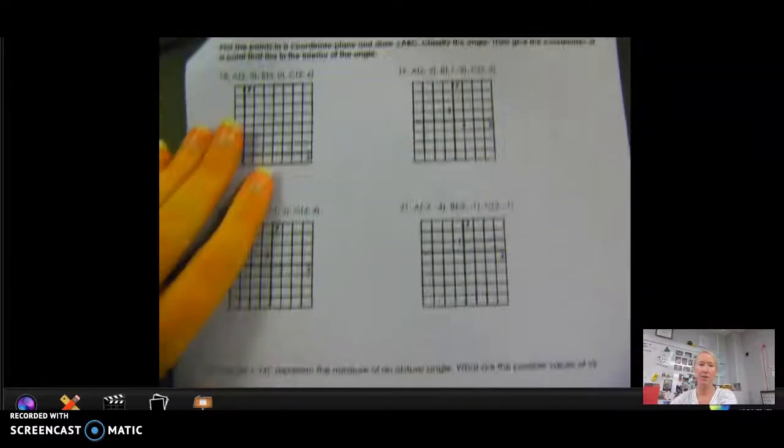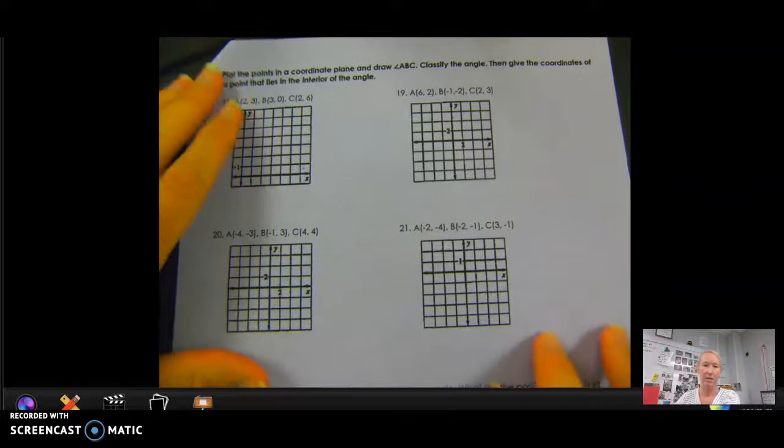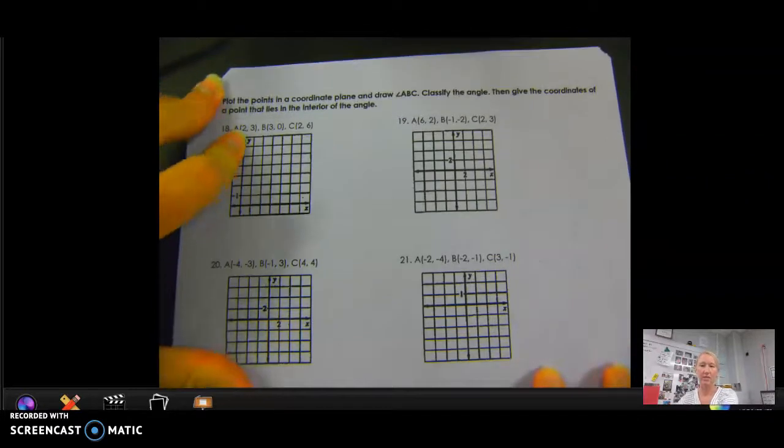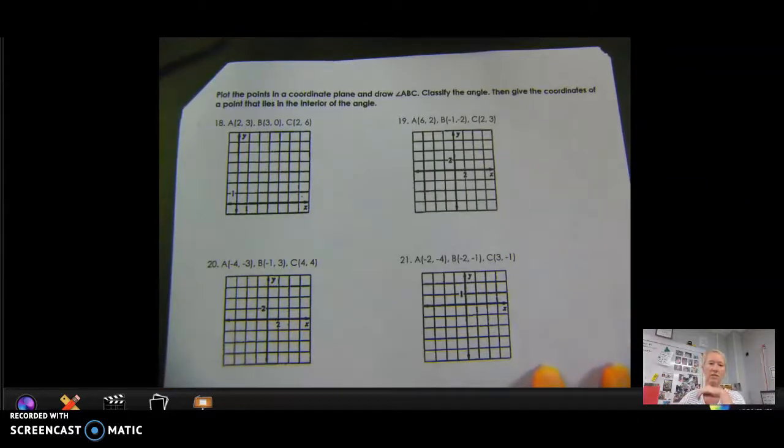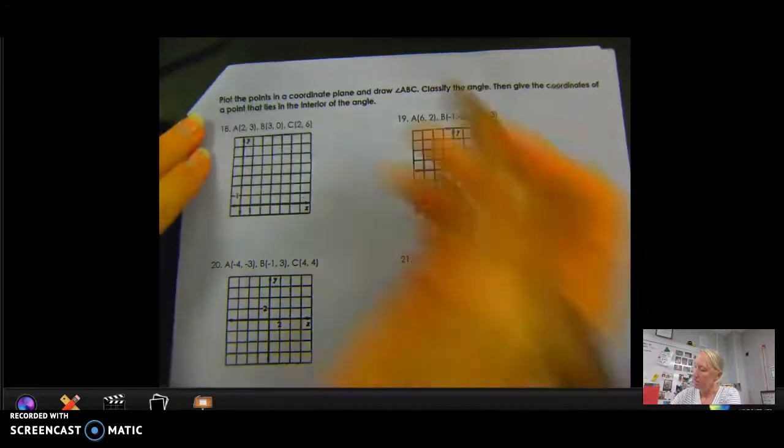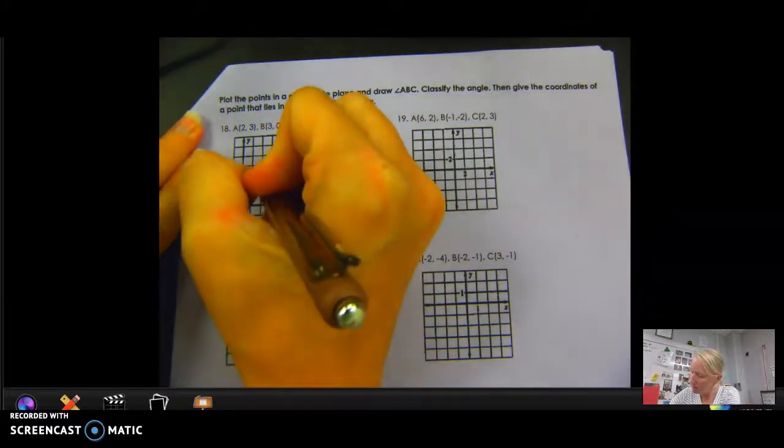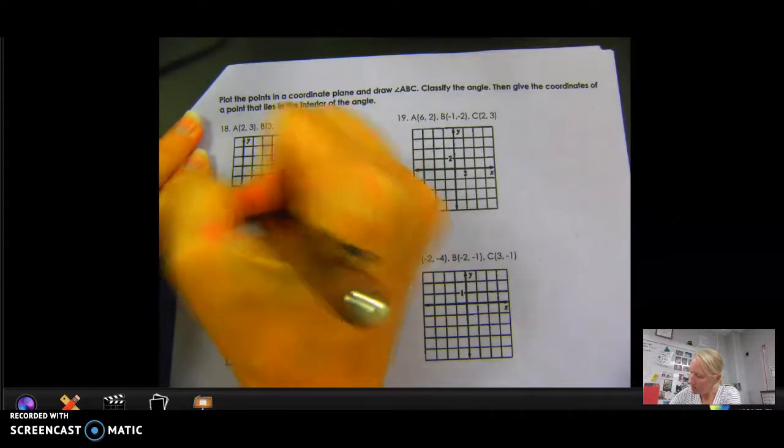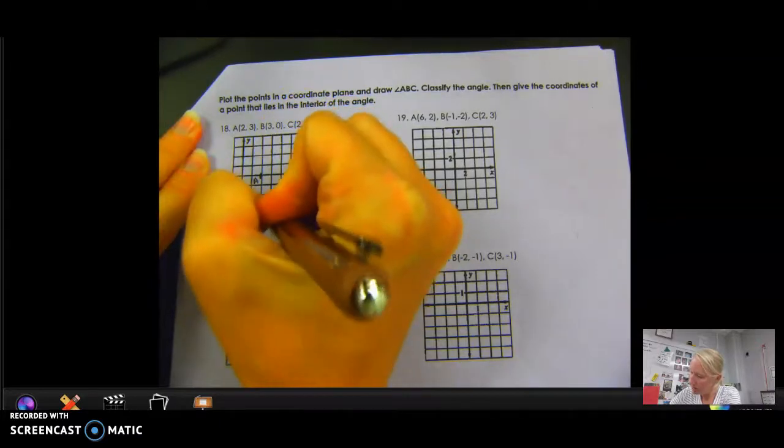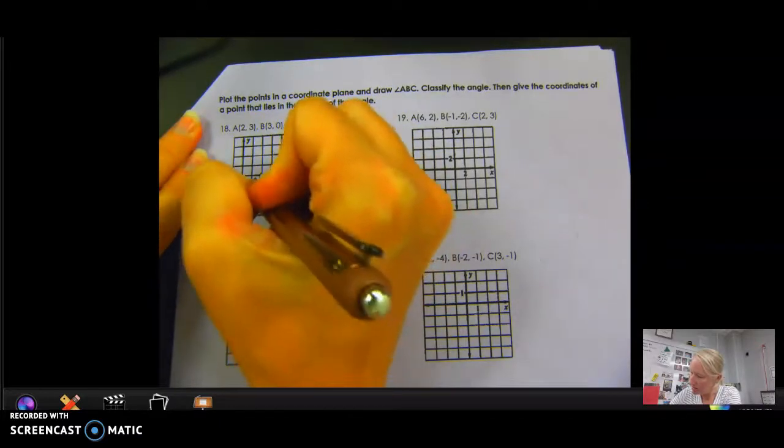Next page. It says plot the points on a coordinate plane and draw angle ABC. Classify the angle and get the coordinates of a point that lies inside. So A is here at 2, 3. B is at 3, 0. And C is at 2, 1, 2, 3, 4, 5, 6.